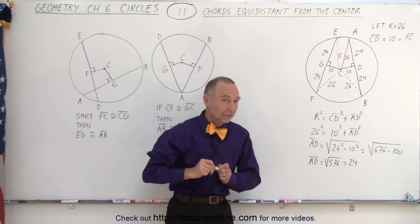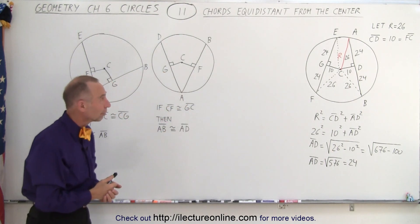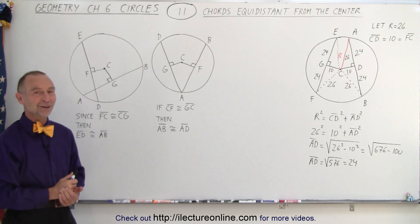So whenever there's two chords that are equally distant from the center those chords must be congruent and that is what we conclude from what we just saw here. And that is how it's done.